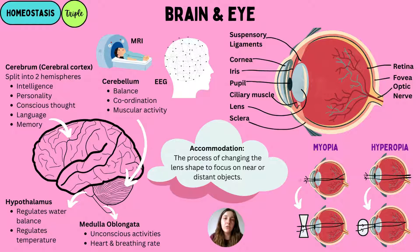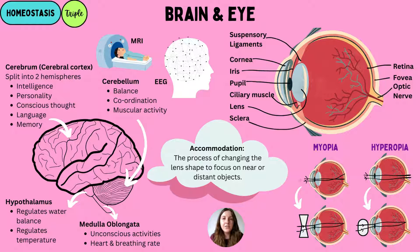There are some other hormones involved with osmoregulation, such as ADH, which is released from the pituitary gland — we'll talk about this later. We also have the medulla oblongata, which connects the brain and brain stem to the spinal cord. Its main job is to help us with unconscious activities such as heart rate and breathing rate. We can identify these different brain parts using technology such as MRI and EEGs.